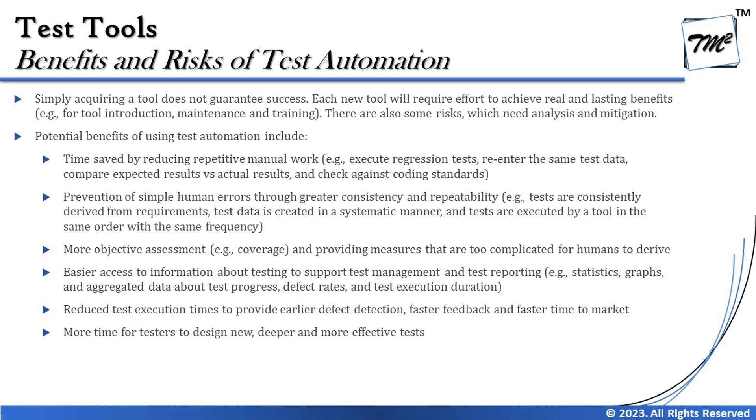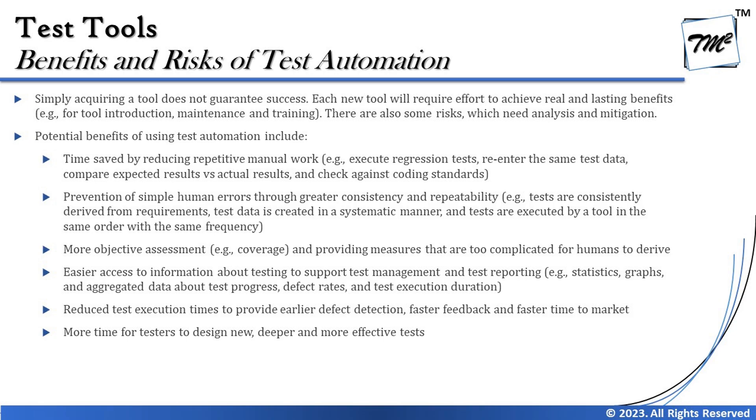Another benefit is more objective assessment and providing measures that are too complicated for humans to derive. For example, in Chapter 4 we covered coverage measurements like statement coverage and decision coverage — with a simple program we could do it easily with a flowchart, but when it is complex, a human mind cannot do it manually. Tools are very capable of doing such evaluations and helping you get the required coverage quickly. Similarly, for traceability matrices, you may not have enough time to manually map 100 requirements to 400 test cases — a test management tool can handle that.